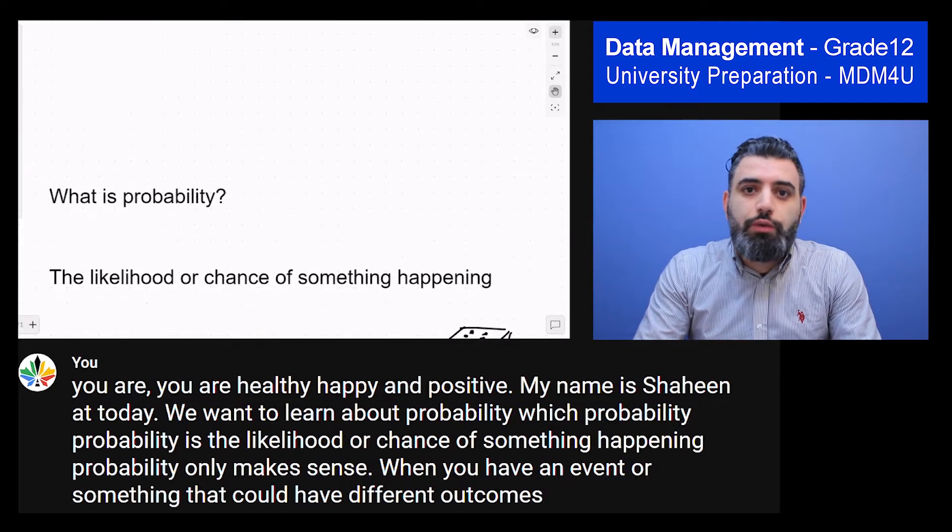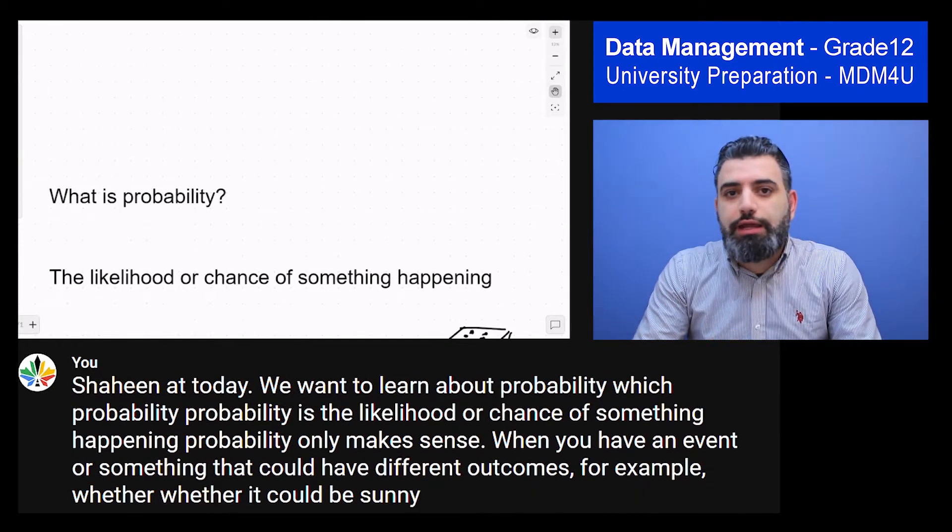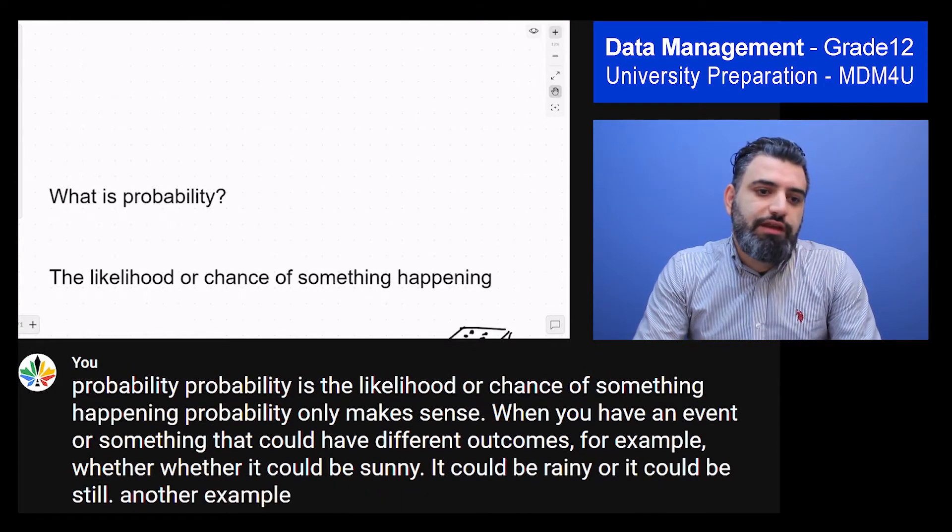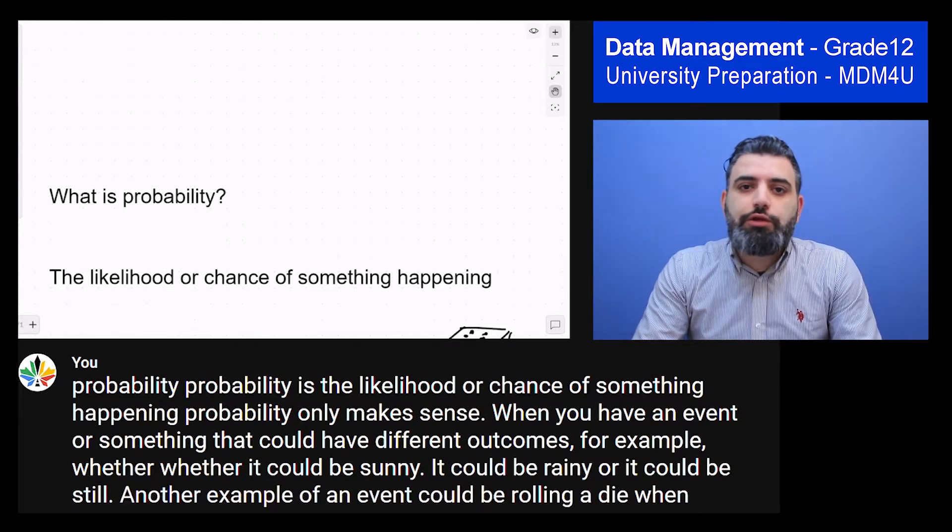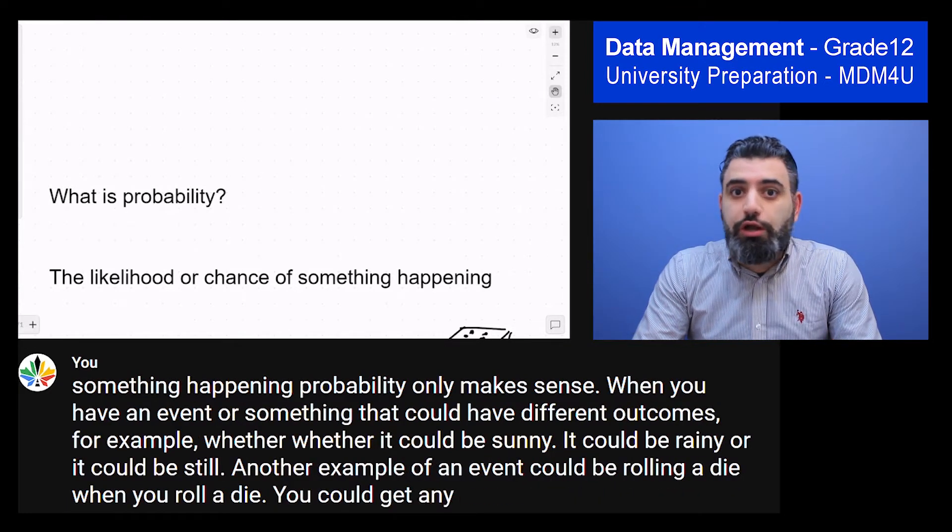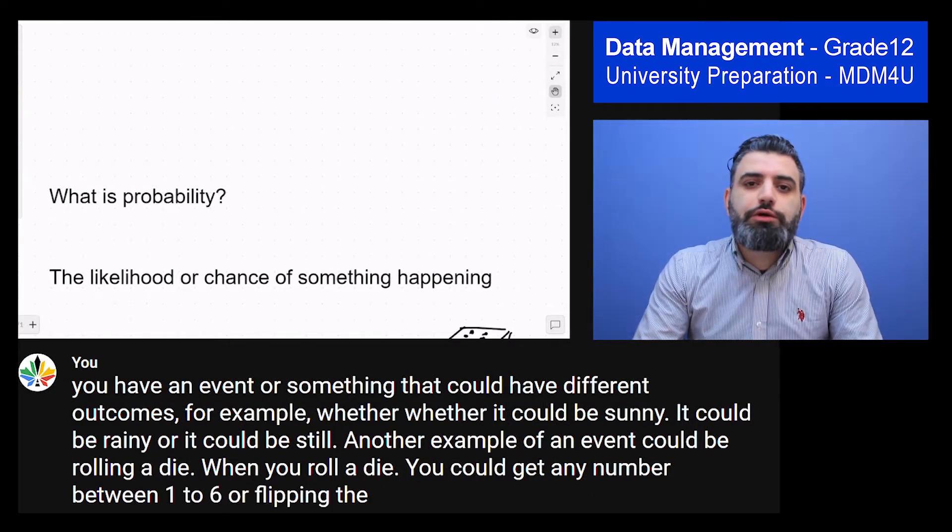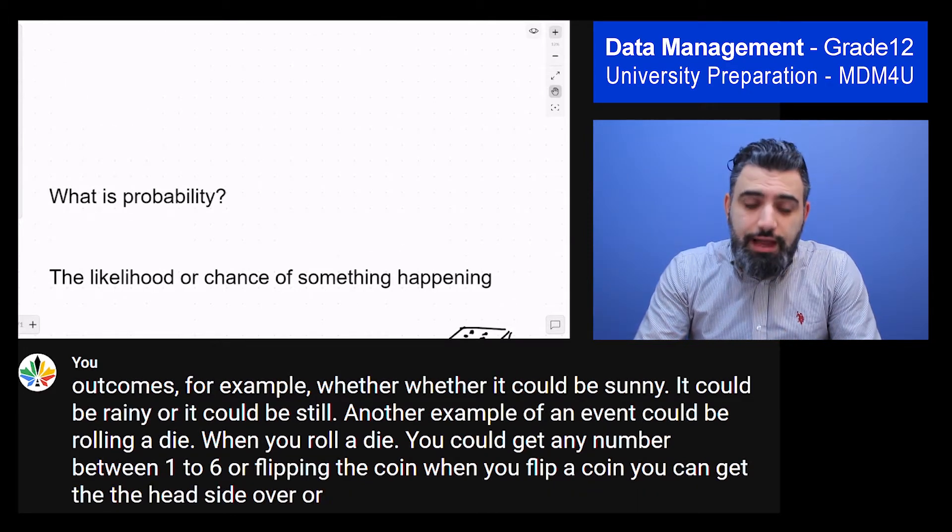For example, weather. Weather could be sunny, it could be rainy or it could be snowy. Another example of an event could be rolling a die. When you roll a die, you could get any number between 1 to 6. Or, flipping a coin. When you flip a coin, you can get the head side or the tail side.